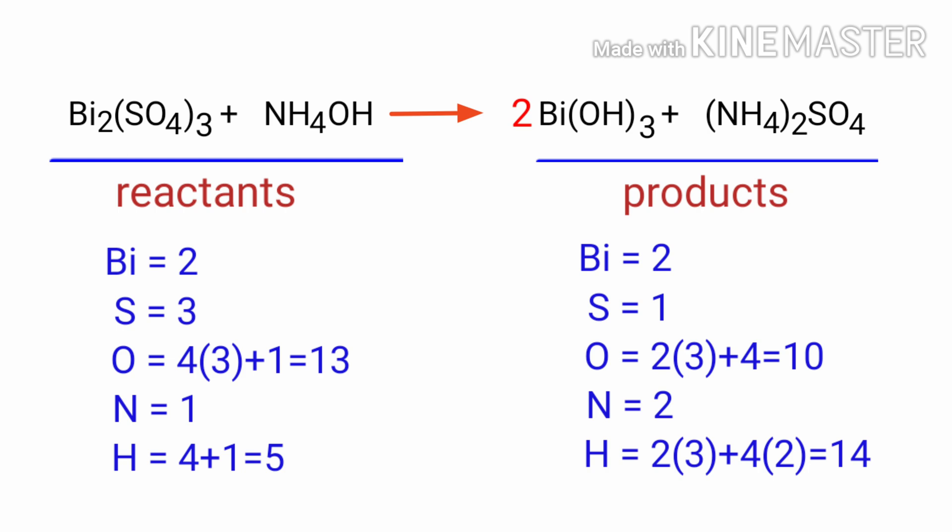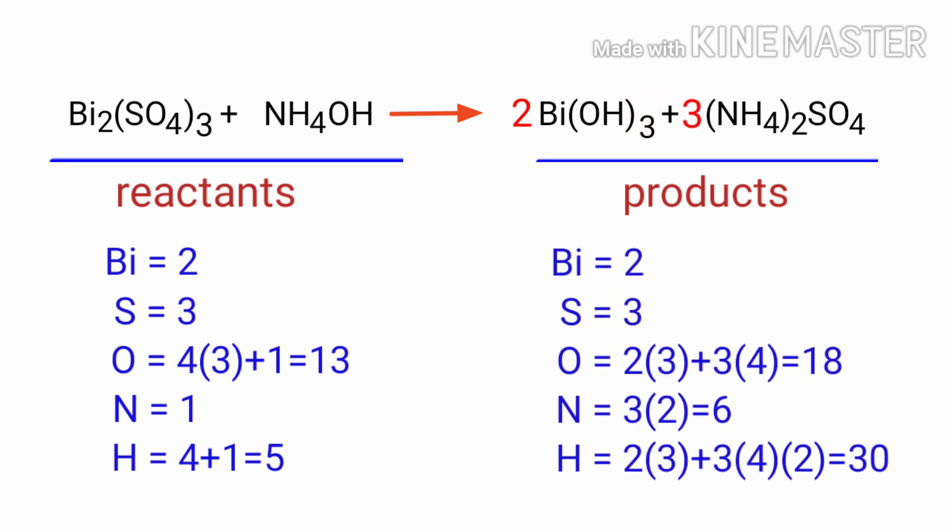Now we need to balance the sulphur atoms. To do this we need to put a coefficient of 3 in front of (NH₄)₂SO₄. The sulphur atoms are balanced.